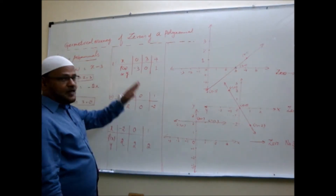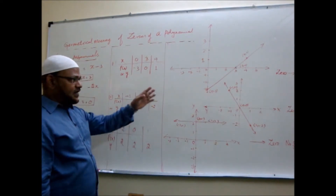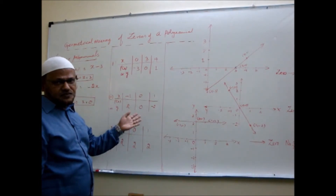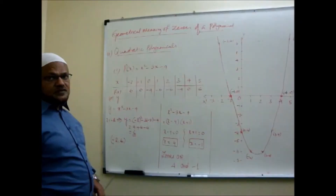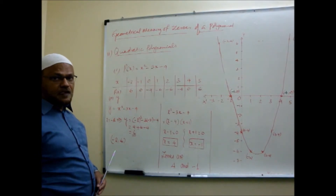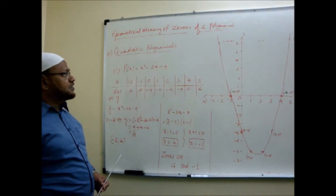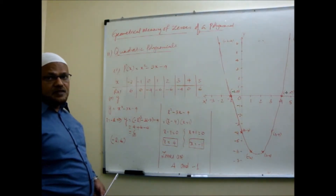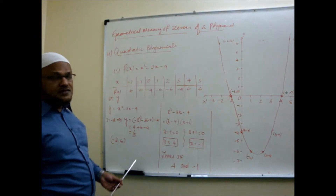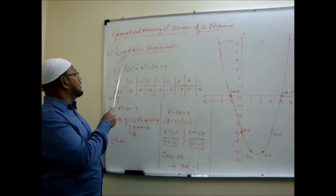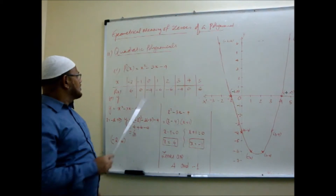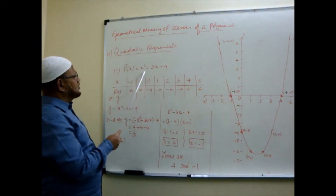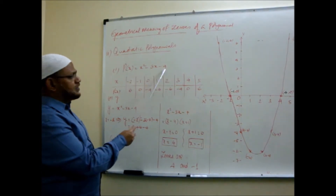Now we see the other examples — how to interpret a quadratic polynomial geometrically on a graph sheet. Continuing, we have seen the geometrical meaning of zeros for some linear polynomials and a constant polynomial. Next we take quadratic polynomials. This is a textbook example: p(x) = x² - 3x - 4.